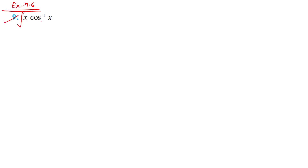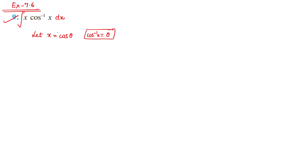In question 9 we have to integrate x·cos⁻¹x with respect to dx. First we simplify it by substituting x = cosθ, so cos⁻¹x = θ. This is similar to question 7 from the last video where we had sinθ. The values θ = cos⁻¹x and x = cosθ will be used after simplification.